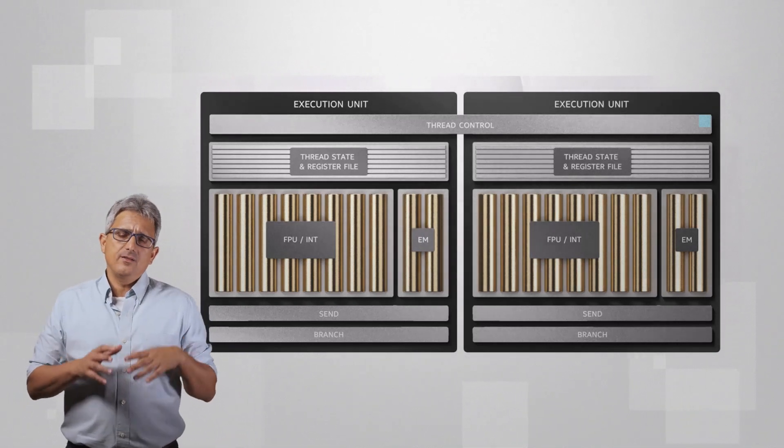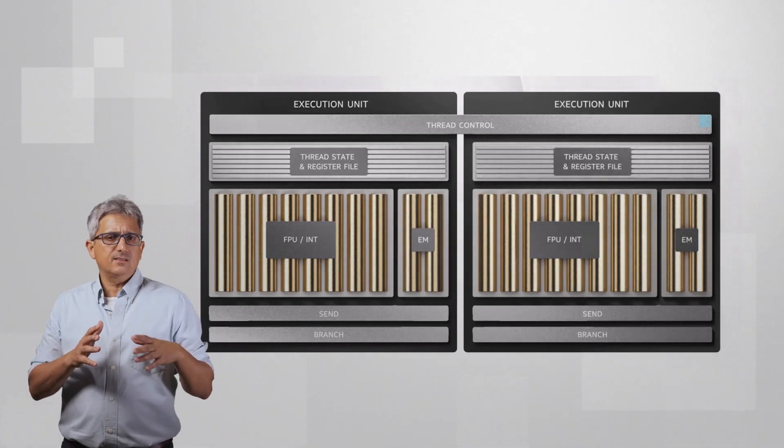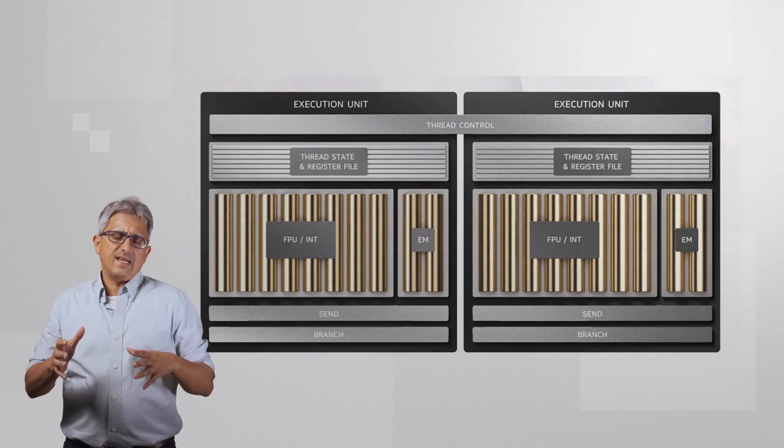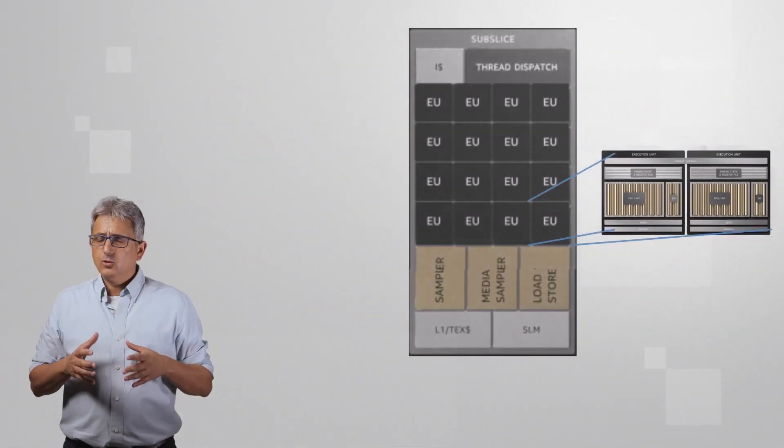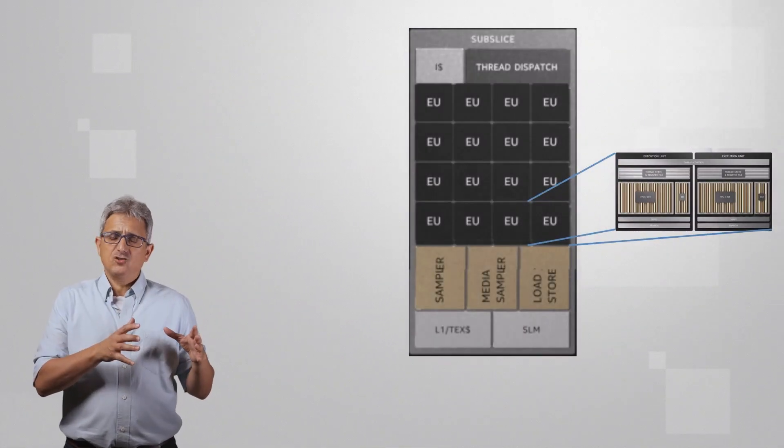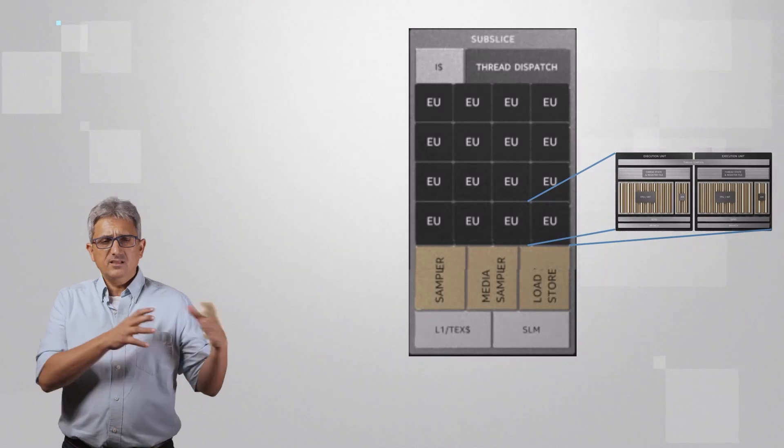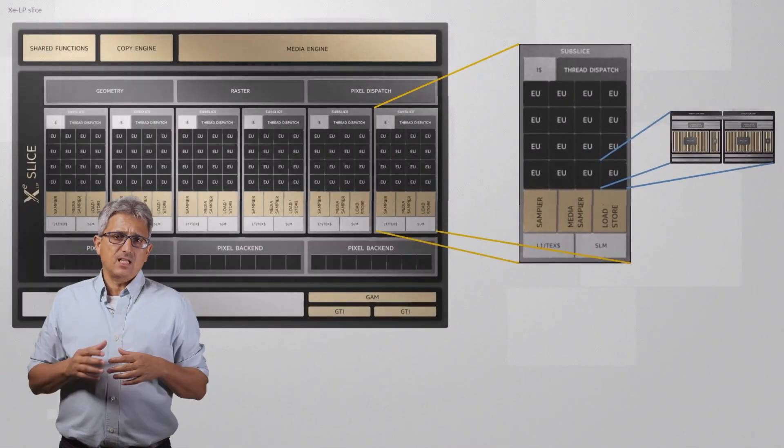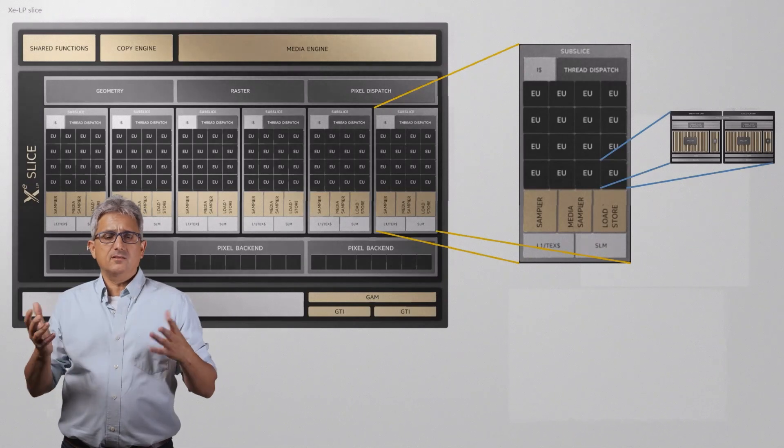This for example is the structure of my Intel Iris Xe LP GPU. The basic building block is an execution unit. A subslice contains 16 such execution units and some other logic. And in my GPU there are 6 subslices that construct one slice.